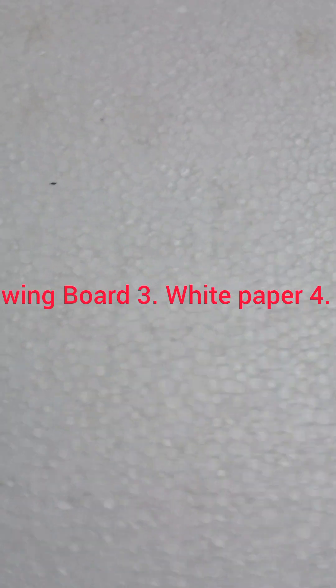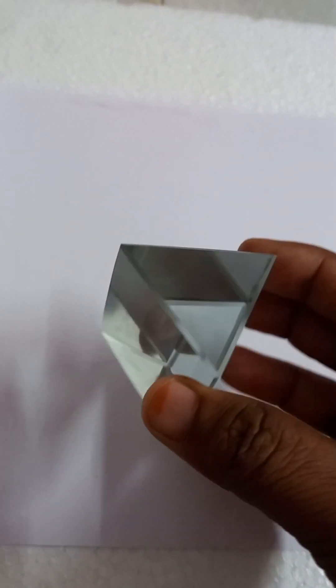To do this activity, the materials needed are: a drawing board — I am using a thermocool sheet as the drawing board. Next, white paper and a triangular glass prism.